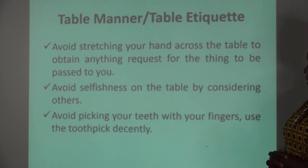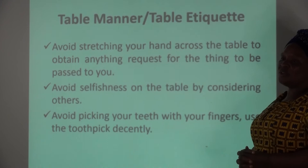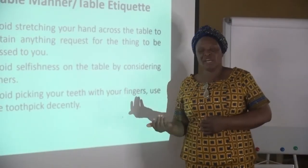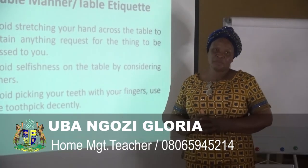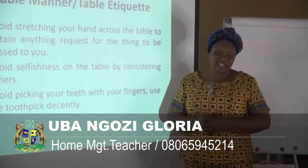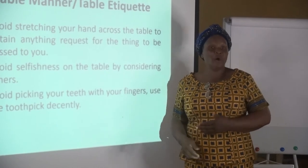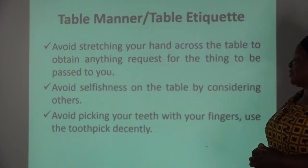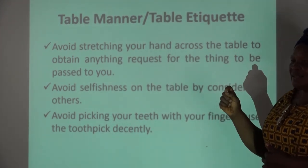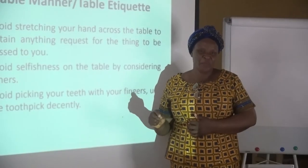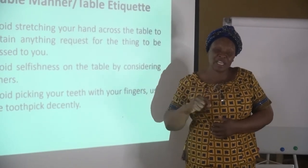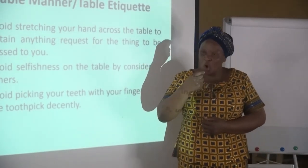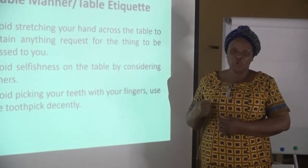Avoid selfishness on the table by considering others. There are those who are very selfish and don't care about who is on their left or right — they want it all for themselves. Use your eyes and look around. Take one piece and allow others to get before you take two. Avoid picking your teeth with your fingers — use the toothpick decently. It might even transfer germs into your mouth if your hand is not washed. If you must pick your teeth, do it decently, not opening your mouth wide for everybody to see.